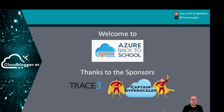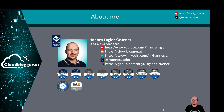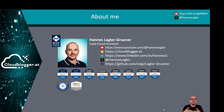My name is Hannes Lagler-Gröner. I'm a lead cloud architect in one of the biggest consulting companies in Austria. My main focus is Microsoft Azure, and I have a lot of experience and certifications in Microsoft Azure in different areas. For four years I've been a Microsoft MVP, and this year I'm also promoted to a double MVP — Microsoft Azure MVP and also a Security MVP. You can find me on Twitter, X, YouTube, LinkedIn, my private blog called cloudblocker.it, and my GitHub repositories where you can find scripts and solutions.